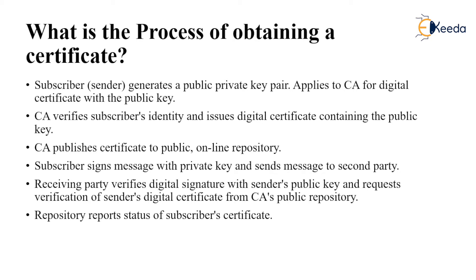The subscriber signs the message with their private key and sends it to the second party. This is similar to what we've seen in hash functionality, where signing is done with the sender's private key and decrypted at the receiver's end with the sender's public key. The receiving party then verifies the digital signature with the sender's public key and requests verification of the sender's digital certificate from the CA's public repository.